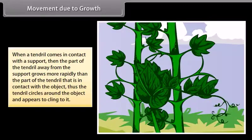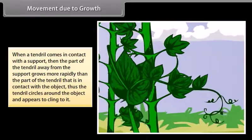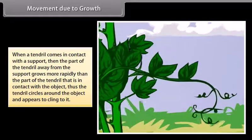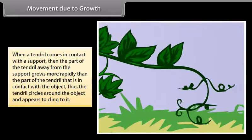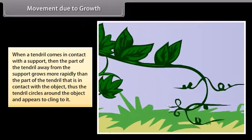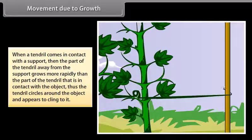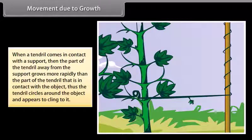Movement due to growth: when a tendril comes in contact with a support, the part of the tendril away from the support grows more rapidly than the part in contact with the object. Thus, the tendril circles around the object and appears to cling to it.